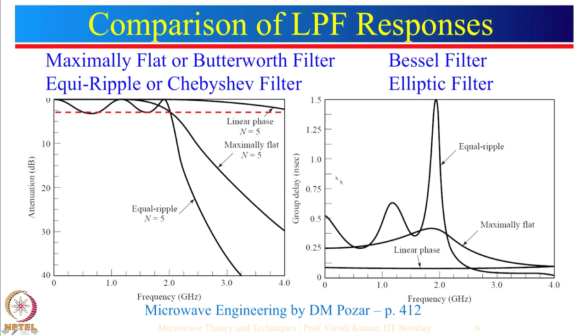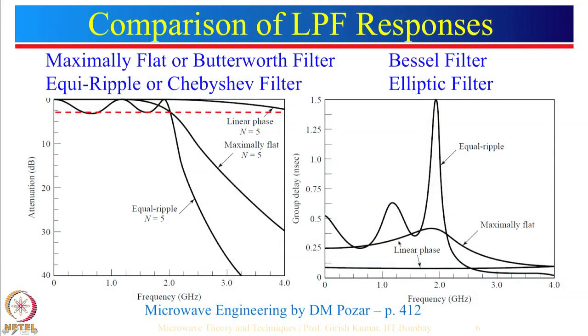However, these group delay values are in nanoseconds — extremely small. For a mobile phone application, a nanosecond group delay difference between frequencies is imperceptible to the human ear. But for certain applications where even this variation is unacceptable, Bessel filters are available. Bessel filters are also known as linear phase filters, meaning constant group delay.